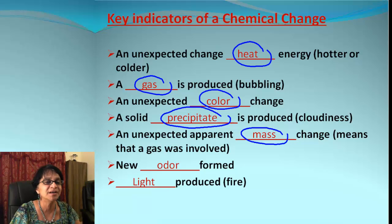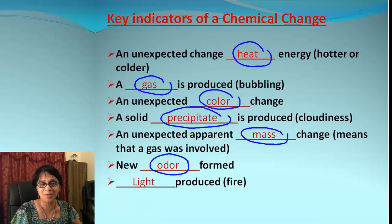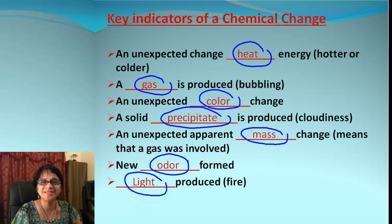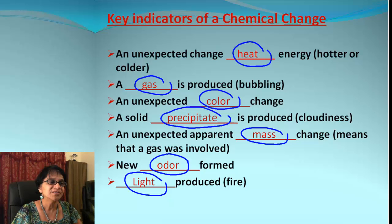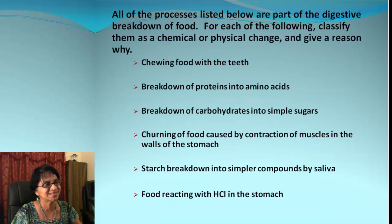Then we also sometimes get unexpected mass change, which tells you maybe a new substance is formed or a gas is released. Also, sometimes you get an odor — good or bad — and of course we also sometimes see light in the form of fire. These key indicators help us decide if it is a chemical change or not.